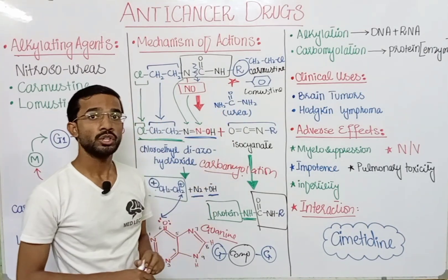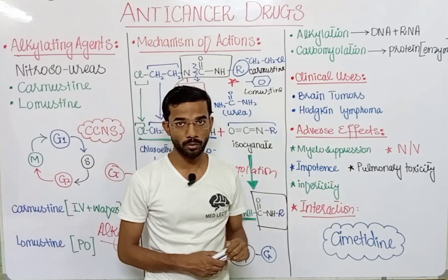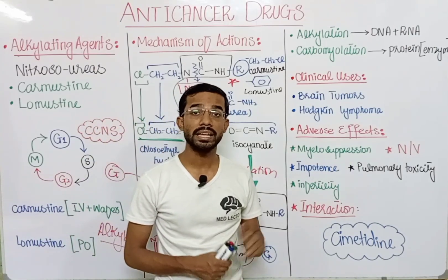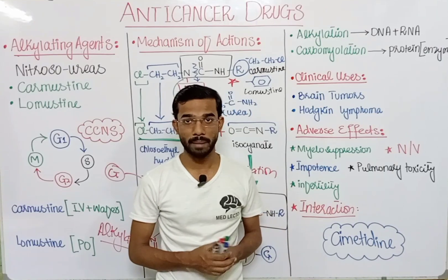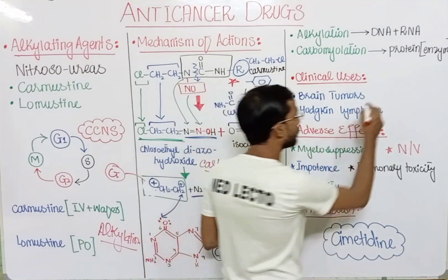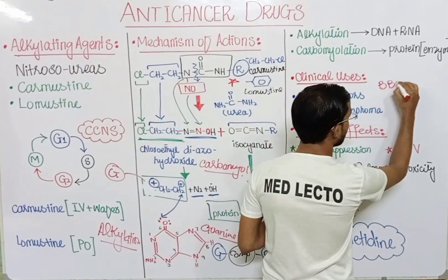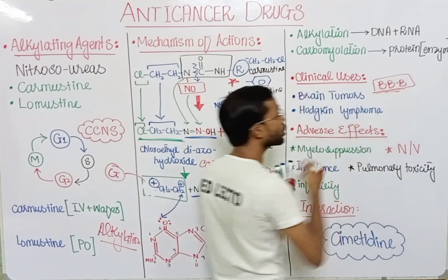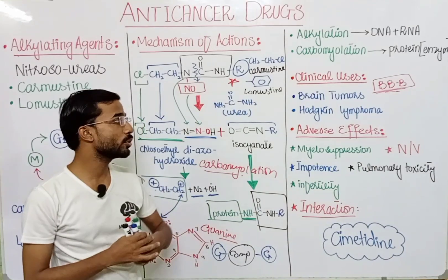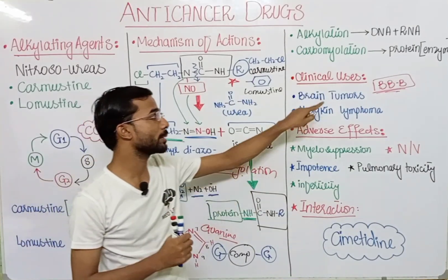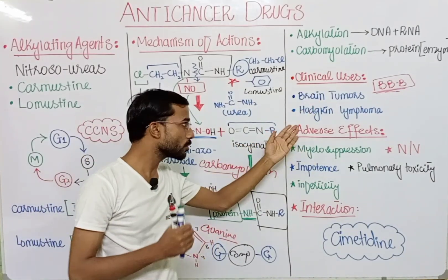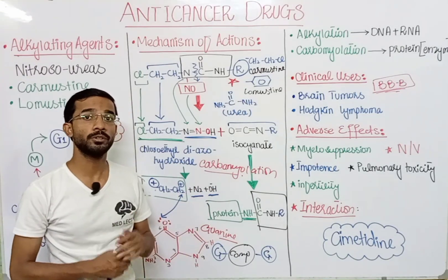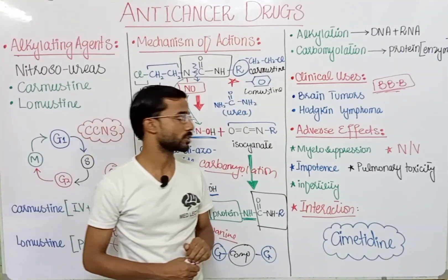Regarding clinical uses, carmustine and lomustine are actually lipophilic. They can easily cross the blood-brain barrier, which is why they are mostly used in the treatment of brain tumors. They can also be used in whole skin lymphoma as well. These are the most important uses of carmustine and lomustine.